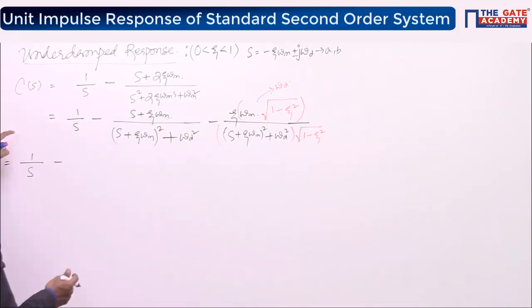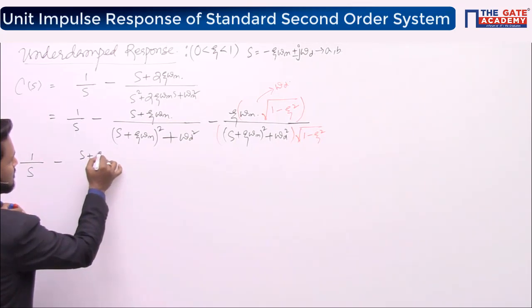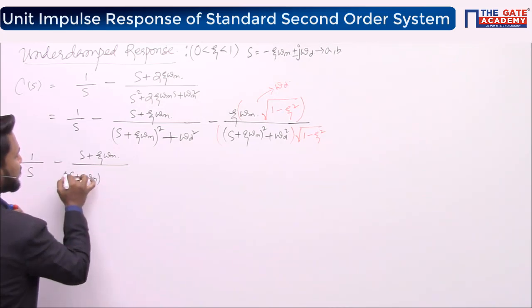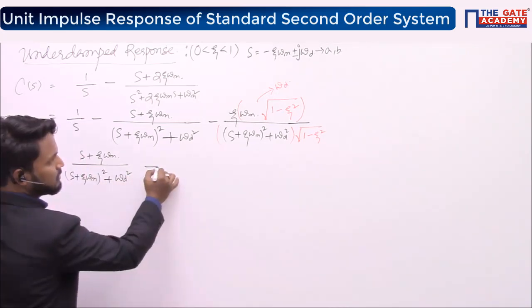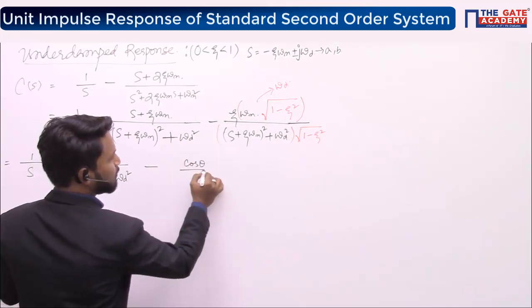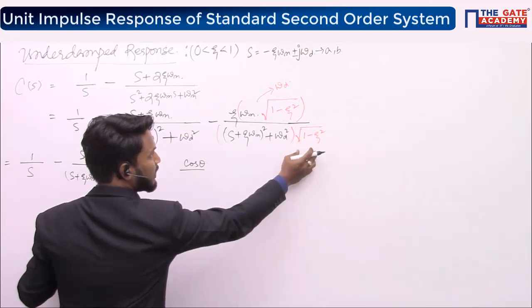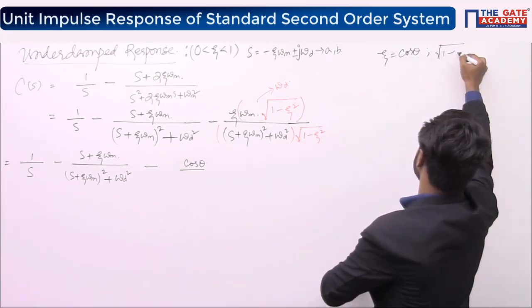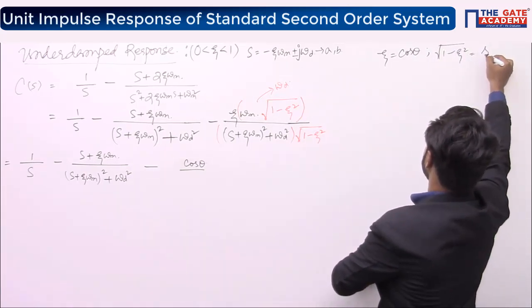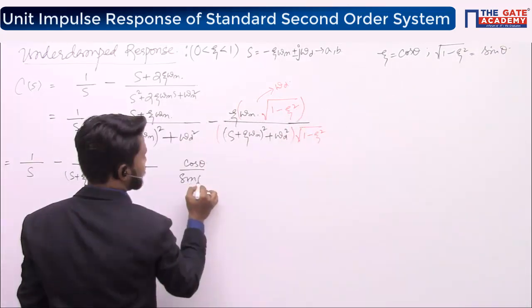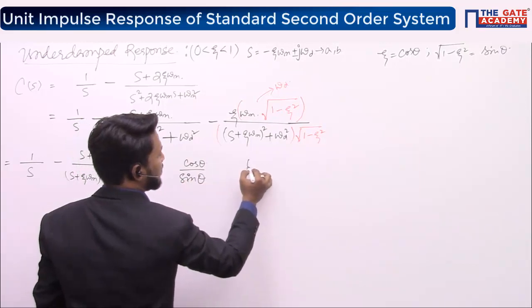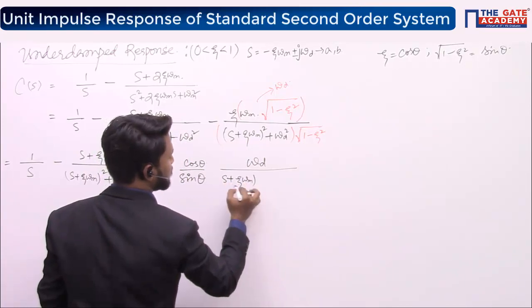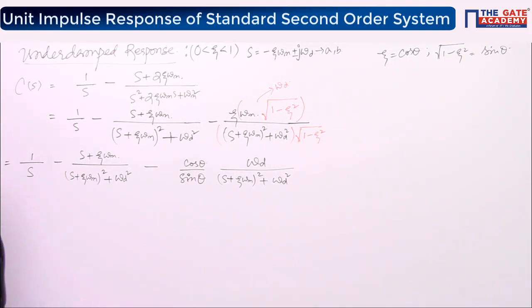Omega n·√(1 − ζ²) is nothing but ωd. If ζ = cos θ, then √(1 − ζ²) = sin θ. So C(s) = 1/s minus (s + ζωn)/[(s + ζωn)² + ωd²] minus (cos θ / sin θ)·ωd / [(s + ζωn)² + ωd²]. This is what we get after multiplying numerator and denominator by √(1 − ζ²).